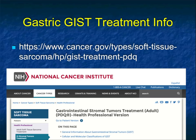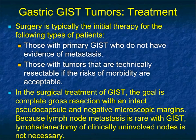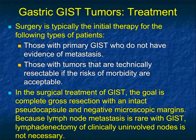For treatment, the NCI is a good resource. Surgery is typically the initial therapy for patients with primary GIST tumors who do not have evidence of metastasis and whose tumors are technically resectable with acceptable morbidity risk. The goal is complete resection with an intact pseudocapsule and negative microscopic margins. This can theoretically be done laparoscopically, but most of the time open procedures are performed, particularly when tumors are large. Because lymph node metastases are rare, lymphadenectomy of clinically uninvolved nodes is not necessary in most cases.